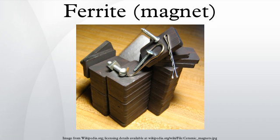Ferrite cores are used in electronic inductors, transformers, and electromagnets where the high electrical resistance of the ferrite leads to very low eddy current losses. They are commonly seen as a lump in a computer cable called a ferrite bead, which helps to prevent high-frequency electrical noise from exiting or entering the equipment. Early computer memory stored data in the residual magnetic fields of hard ferrite cores, which were assembled in two arrays of core memory.